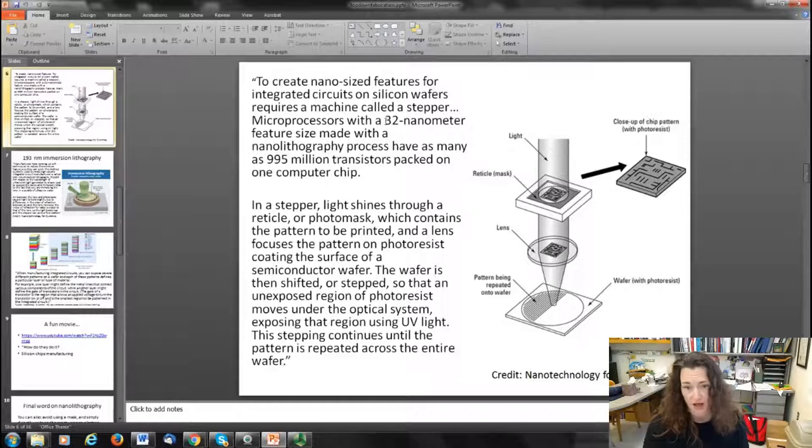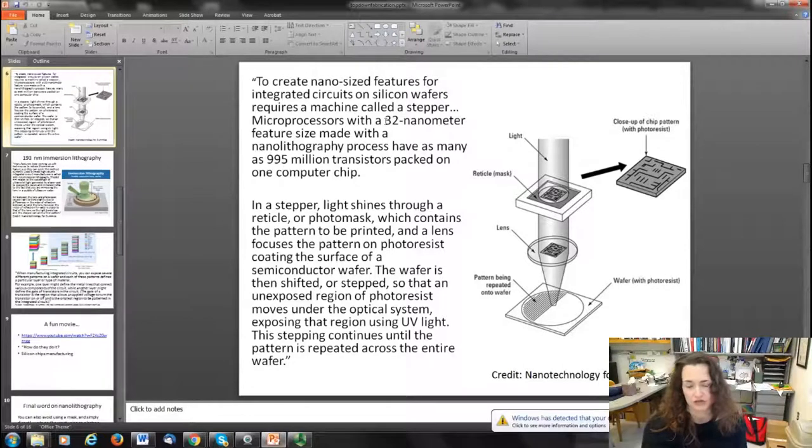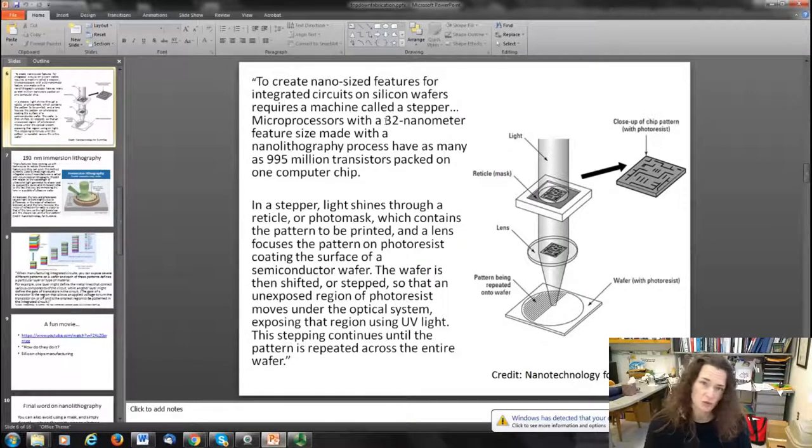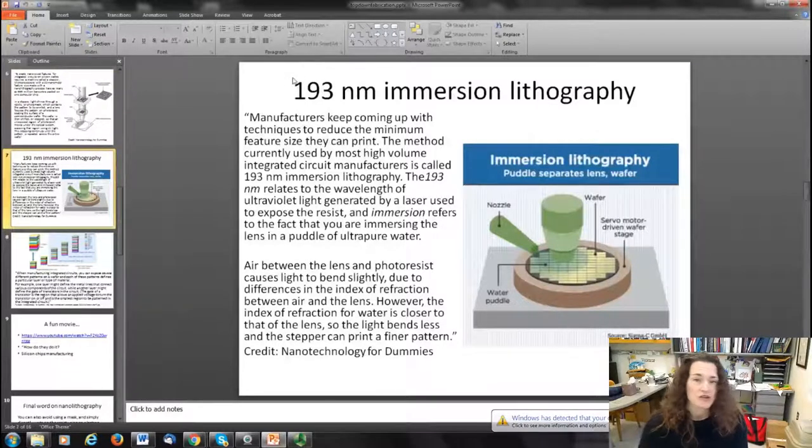In a stepper, light shines through the photomask which contains the pattern to be printed, and then a lens focuses the pattern on the photoresist coating the surface of the semiconducting wafer. The wafer is then shifted or stepped so that an unexposed region of the photoresist moves under the optical system. That stepping continues until the pattern is repeated across the entire wafer.